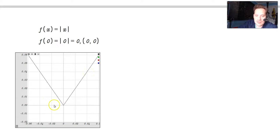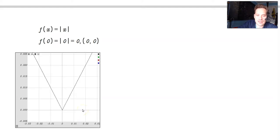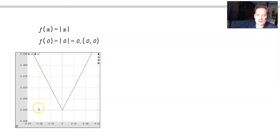It doesn't matter how closely you zoom in around the origin. So one more time just to emphasize this. You're going to go 0.02 down, 0.02 over, the ratio is negative 1. 0.02 over, 0.02 up, the ratio is positive 1.